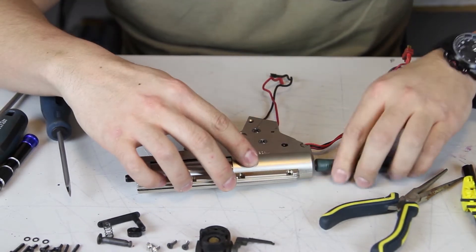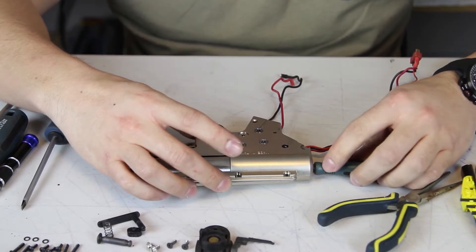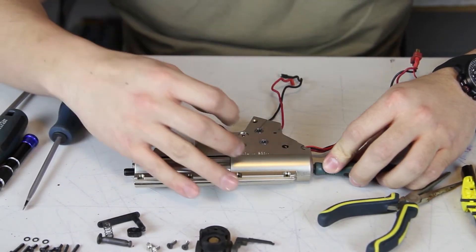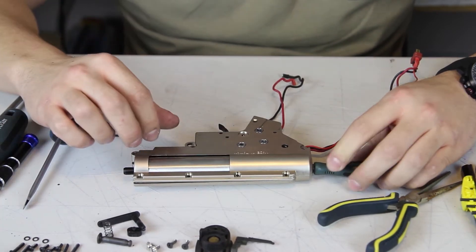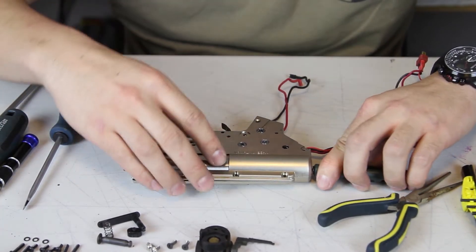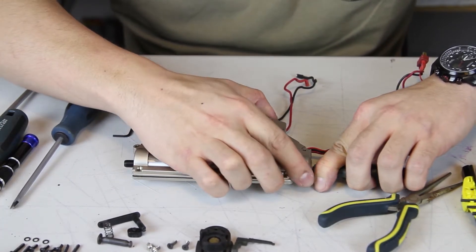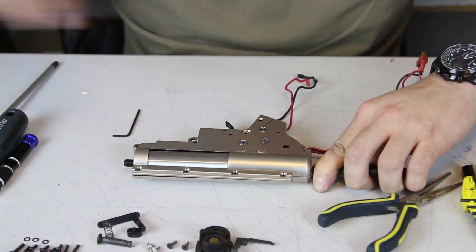You should continue to pry until your gearbox releases, which will generally make an audible click. Once that happens, you will be ready to take the cover off. Putting a lot of downward pressure on the screwdriver that is inserted into the spring guide, gently start to lift the cover off. If it is not loose enough to come off yet, keep prying with a flathead screwdriver until you can easily and gently lift it off.